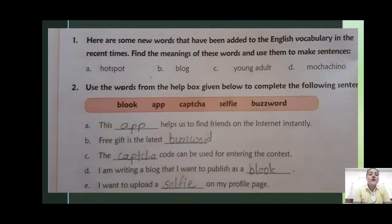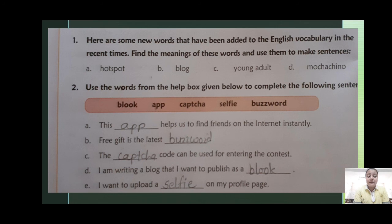Here are some new words that have been added to the English vocabulary in recent times. Find the meanings of these words and use them to make sentences. First: hot spot. Second: block. Third: young adult. Fourth: mocasino. You can find out the meanings of these words and make sentences using them.